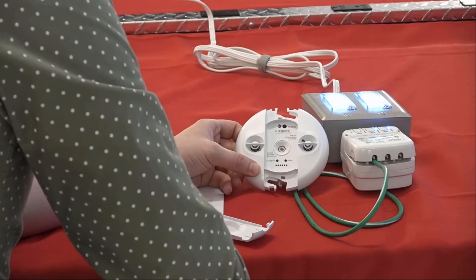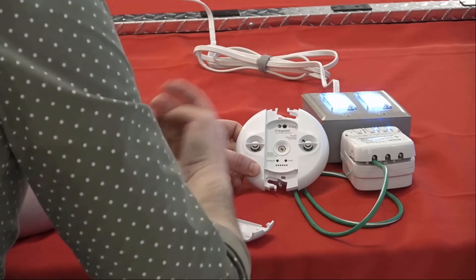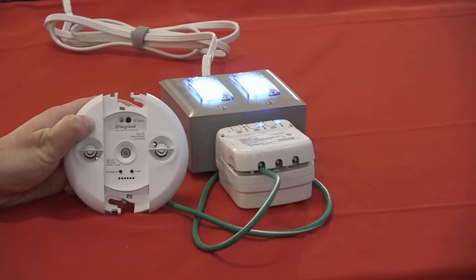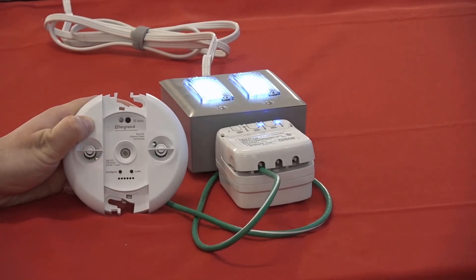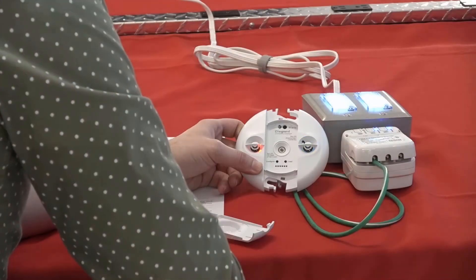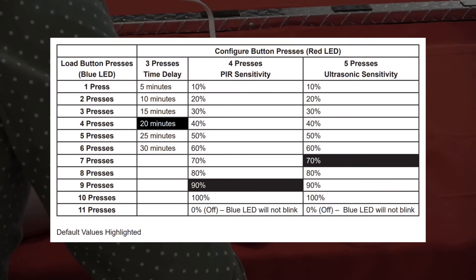If I instead wanted to update the sensor to 15 minutes, I can either exit and re-enter the parameter mode or continue cycling through values. To save this setting, I'll press the configuration button three times corresponding with the time delay setting. The process for updating ultrasonic and PIR sensitivity is identical, but note that the 0% or off value is at position 11.